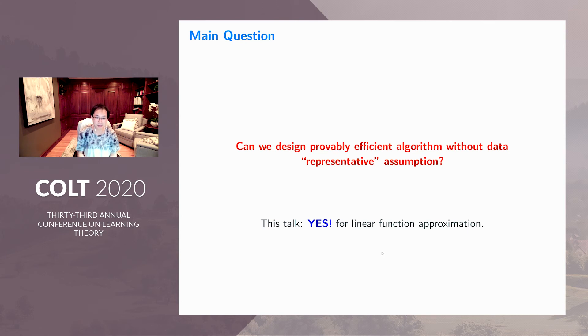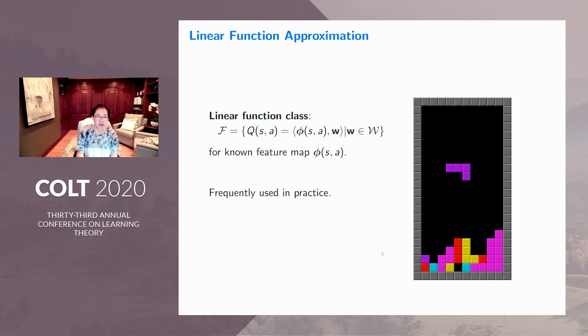This work provides a positive answer to these questions in a relatively basic setting: linear function approximation. What is linear function approximation? We're saying there's an underlying feature representation, a feature map phi function of each state and action. And our value function, Q-function, is just a linear function of this underlying feature map. It turns out this linear function approximation is frequently used in practice. For example, in Tetris games, you can build good linear features by counting how many holes you have, how many pieces you have in the game, and how many rows you have. This value approximation works pretty well for those Tetris games.